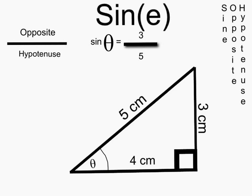Sine. Sine is the opposite side divided by the hypotenuse. In this case, sine theta is 3 over 5. An easy way to remember, sine is SOH, which stands for sine opposite hypotenuse.